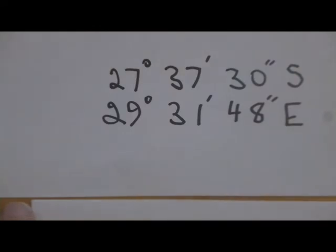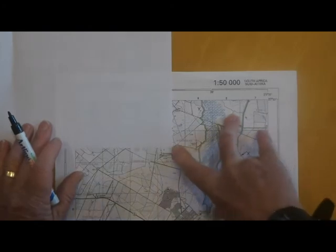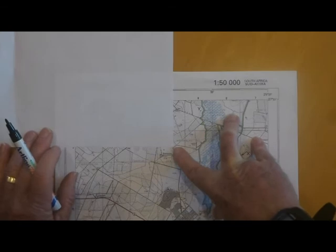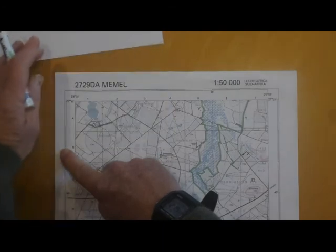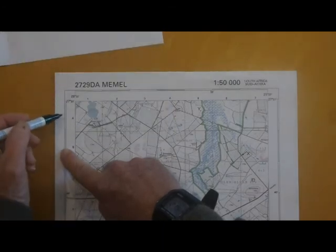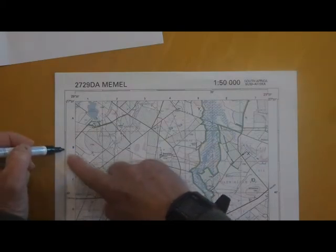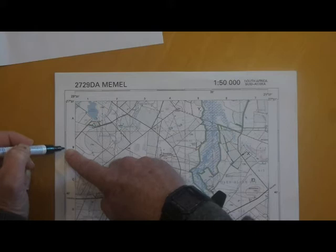Right, and so we can just practice that a little bit. Try another point over here, this intersection. Make sure that our paper is lined up square. And we read across the latitude, 27, 37, 27, 38, and that's about 0.6. So 0.6 times 6, and 0.1 is 6 seconds. So 0.6 times 6 is 36 seconds.